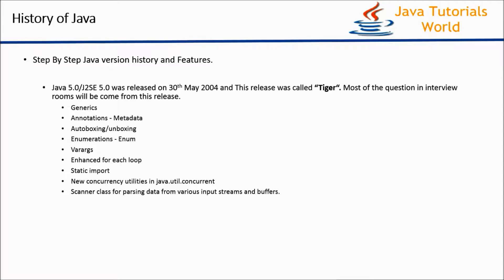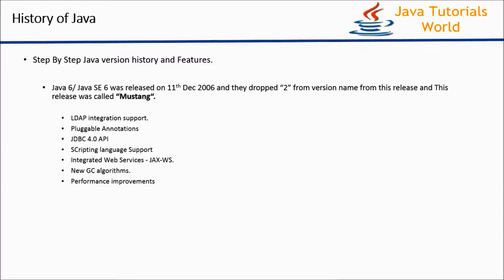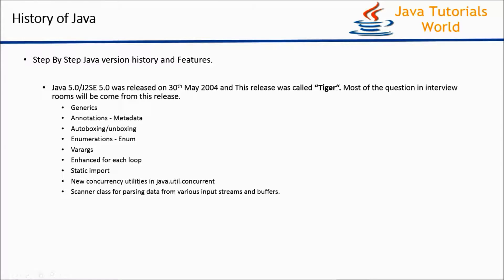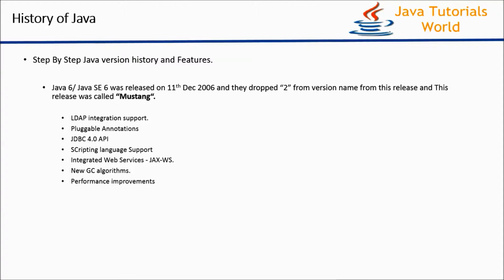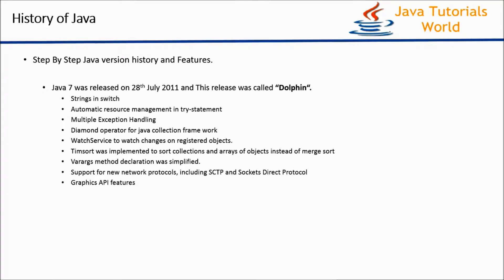The next release of Java is Java 6.0, released on 11th December 2006. From this release onwards, the number 2 was dropped from the release name — in Java 5 it was J2SE 5.0. This release includes features like LDAP Integration Support, Pluggable Annotations, JDBC 4.0 API, Scripting Language Support, Integrated Web Services, new Garbage Collector algorithms, and some performance improvements.